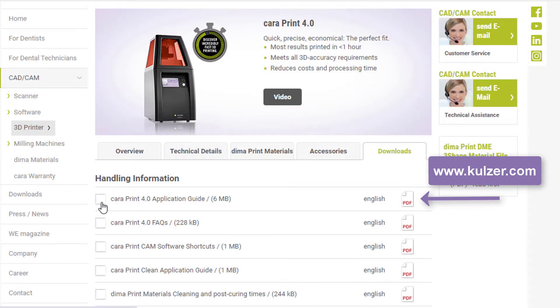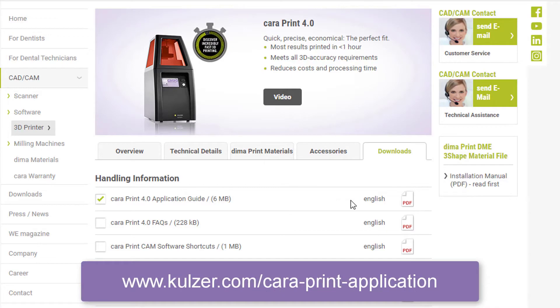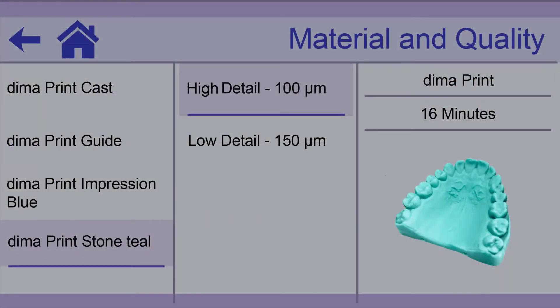Import the print files into the internal library and select the corresponding data set from the material list. From firmware version 70, a material data record for DEMA print stone teal is available.